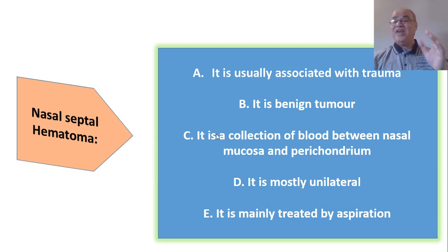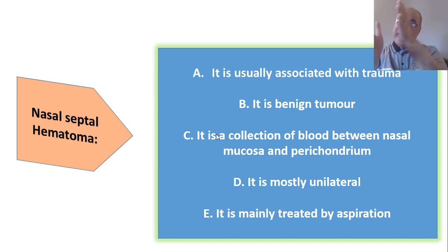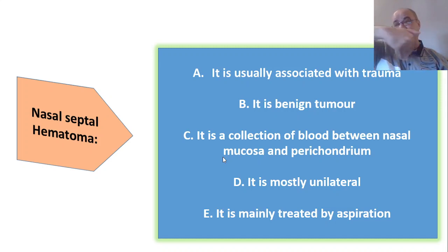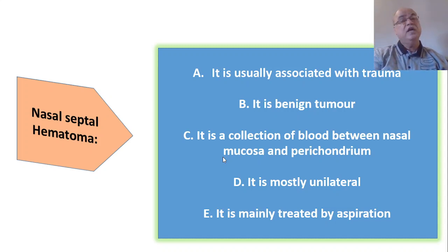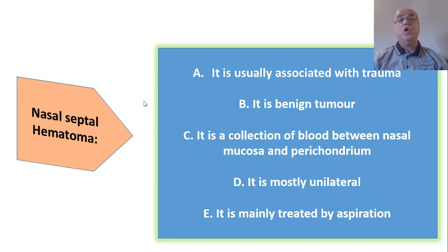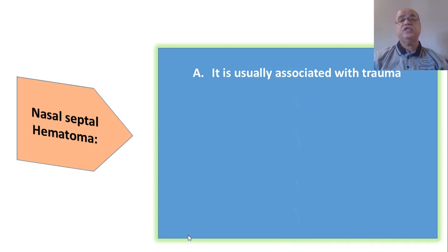Regarding nasal septal hematoma: it is not a benign tumor, but a collection of blood between the mucoperichondrium and the septal cartilage — not between the mucosa and perichondrium. It is mostly bilateral, not unilateral, because by gravity the blood from the caudal border tracks to the other side, causing bilateral nasal swelling and obstruction. Although aspiration is a mode of treatment, the main treatment is incision and drainage under aseptic measures. It is usually associated with trauma.